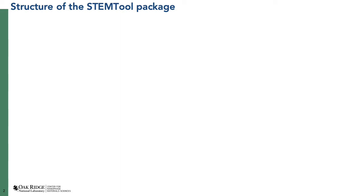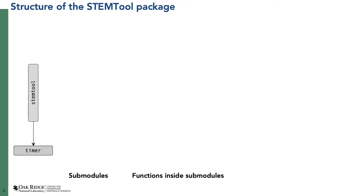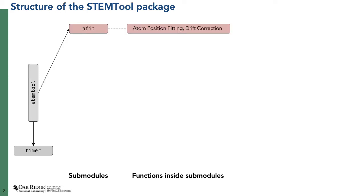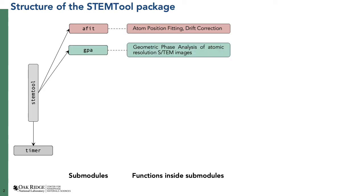The structure of this package is in the form of sub-modules. The main module StemTool only has a timer function inside it and everything else is in seven sub-modules. The first sub-module is AFIT, which does atom position fitting and drift correction. In atom position fitting it takes atomic resolution STEM data and fits the positions with 2D Gaussian peaks. For drift correction you can pass a stack of fast-corrected STEM images to correct for scan drift. The second sub-module is GPA, which does geometric phase analysis of atomic resolution STEM images or even TEM images.